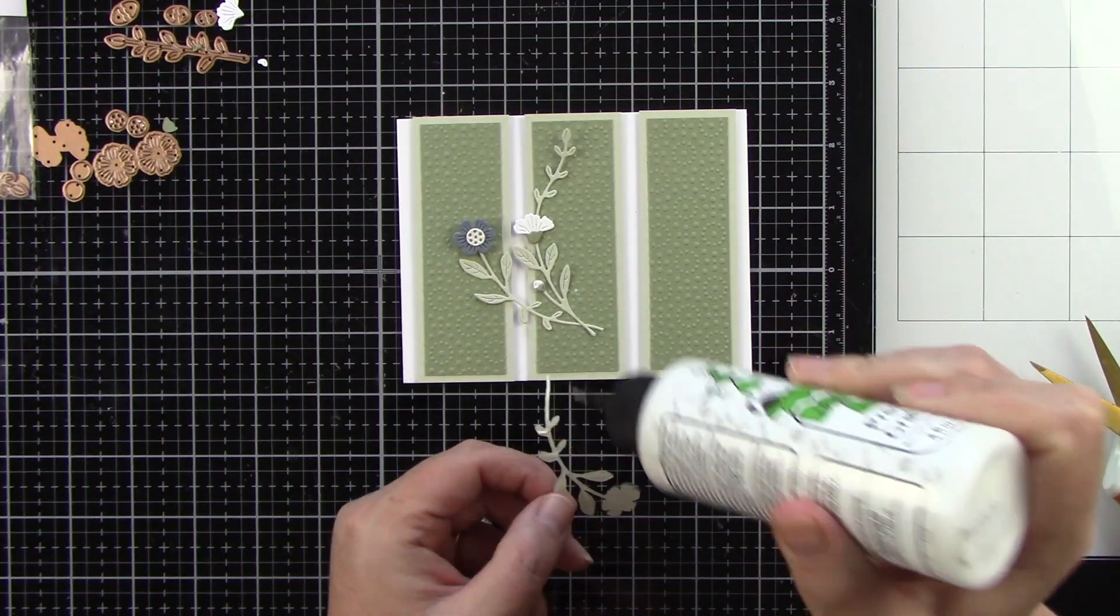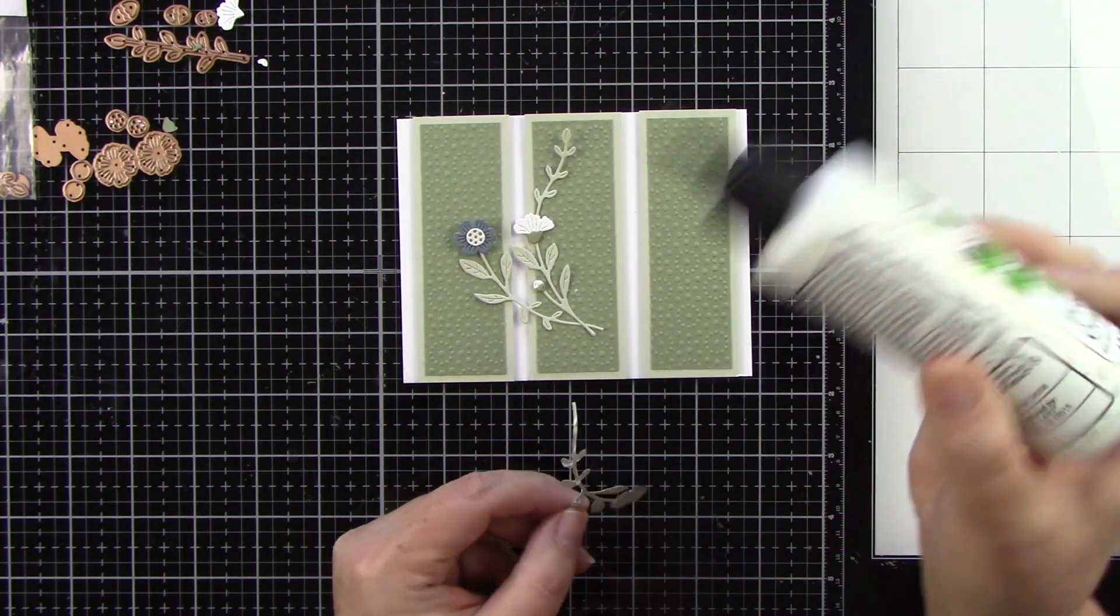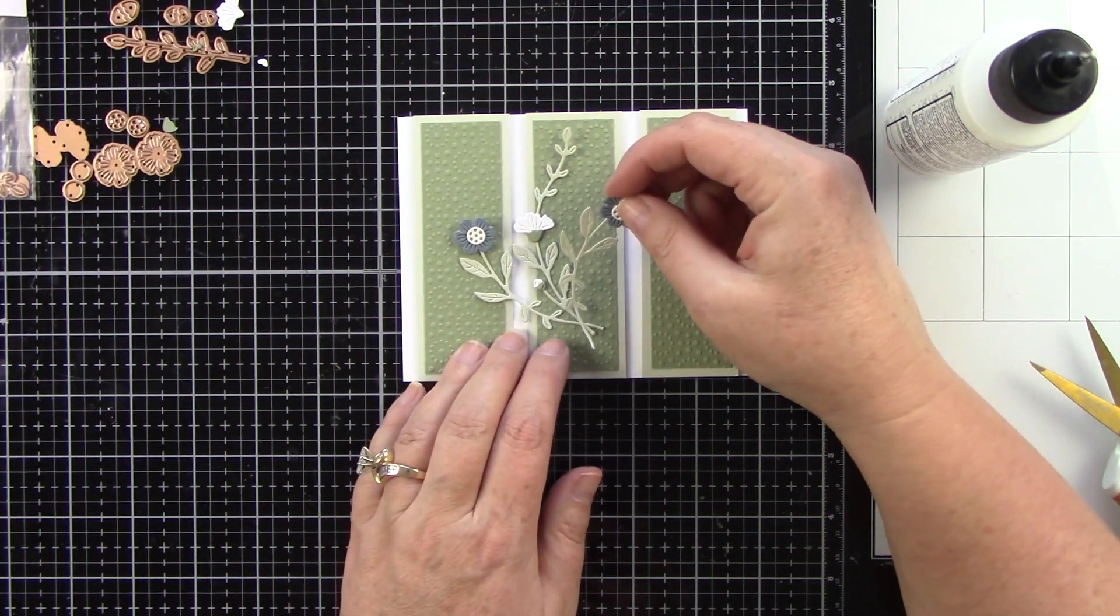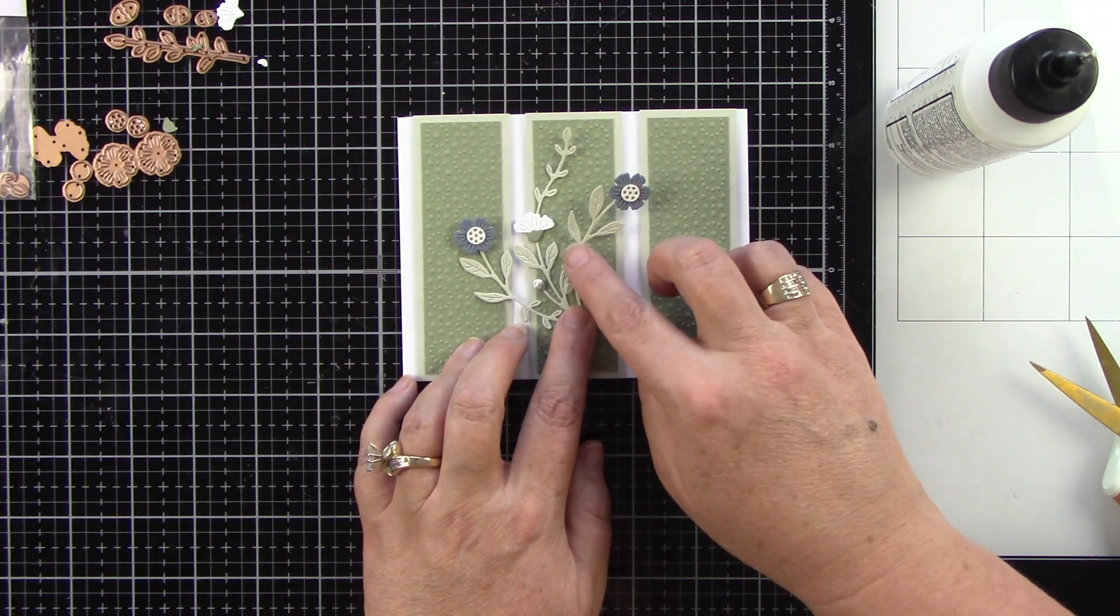Now I've adhered down two of those florals and I'm having them cross at the bottom like the bottom of the stems. I'm just going to have them kind of laying there together but look at how pretty that is.